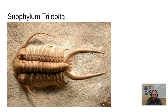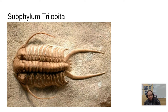Trilobites lived from the Cambrian period to the Carboniferous period. The body is divided by two longitudinal furrows, which you can see here, dividing the body into three lobes, with a very distinct head, trunk, and abdomen. They have biramous appendages, which links them to the previous subphylum we talked about — the Crustacea.